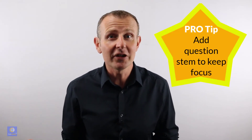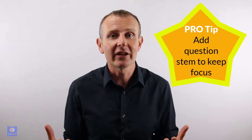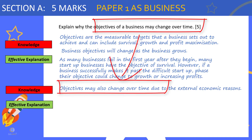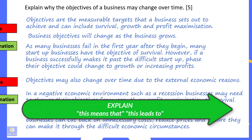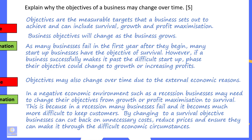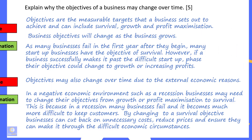Many students can lose focus with the second explanation, so a good strategy is to write the question stem: 'Objectives may also change over time due to...' and then add the reason. We use the example of a recession to show how the objectives of a business may change over time. Remember to use connectives like 'this is because' to move your answer from knowledge to an effective explanation.